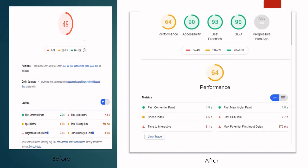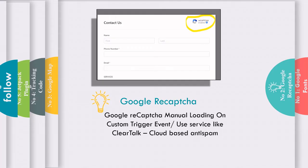So what could you use instead of Google ReCaptcha? Well, you can still use Google ReCaptcha but with some code changes. You can manually load it on a custom trigger event — that is, when users interact with the form, which will trigger Google ReCaptcha. I have given the link in the description below on how to manually load Google ReCaptcha on a custom trigger event. Otherwise, you can invest in any anti-spam service.